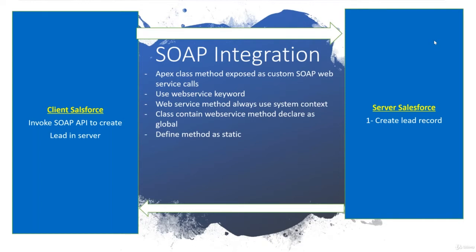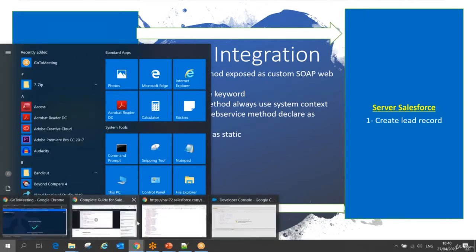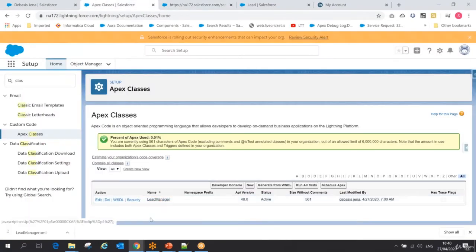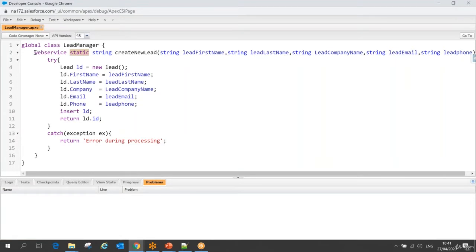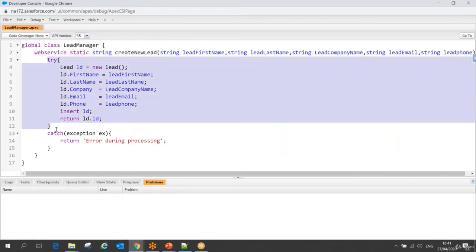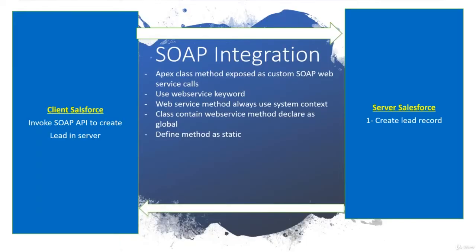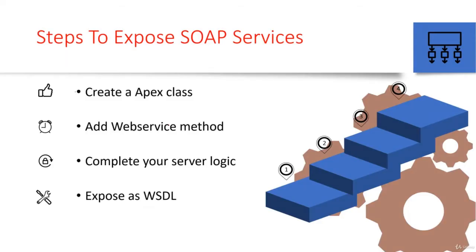In the previous session we saw how to create an Apex class - a global Apex class with a web service method. We created a class called Lead Manager, which has a web service method with our logic written in it. Now we'll understand: if I create a web service class, what do we need to do? We create the class, add the web service method, add our logic, and then the next step is to expose the WSDL file.